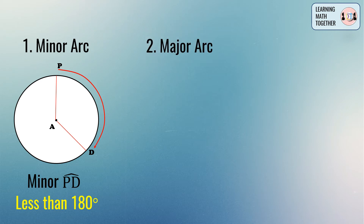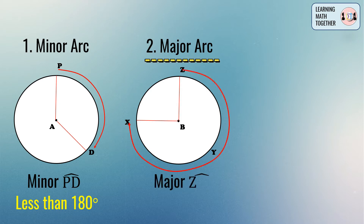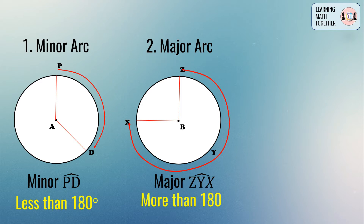Now let's move on to the second type of arc, which is the major arc. We have here circle B — arc ZYX is what we call the major arc. It is because the measurement of this arc is more than 180 degrees but less than 360 degrees.